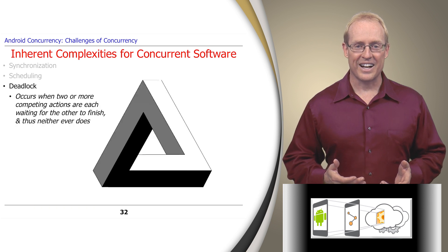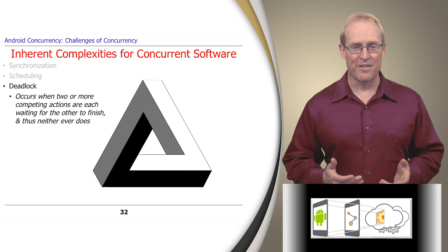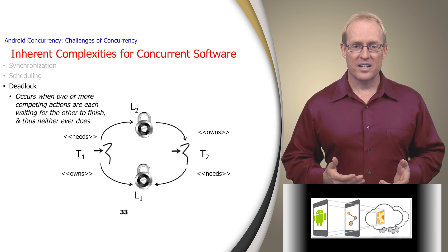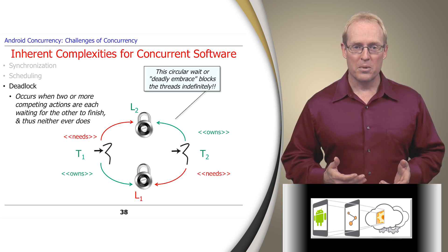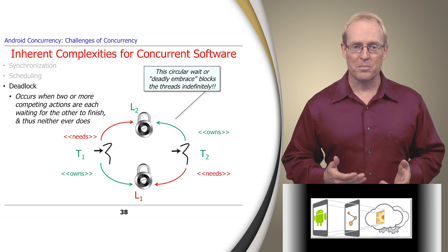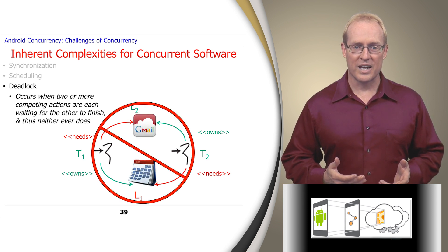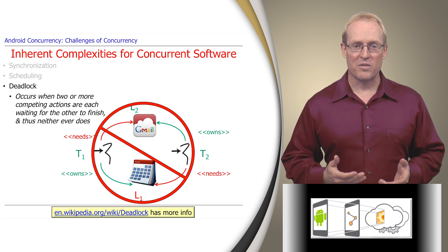Another inherent complexity is deadlock, which occurs when two or more competing actions are each waiting for the other to finish, and thus none ever do. The diagram on this slide shows a deadlock where thread T1 owns lock L1 and needs to acquire lock L2, while thread T2 owns lock L2 and needs to acquire lock L1. This circular wait, or deadly embrace, blocks the threads indefinitely. Identifying, detecting, and removing deadlocks is an inherent complexity of developing concurrent software. For example, you wouldn't want the Android Gmail application to deadlock on resources held by the calendar application and vice versa. This link provides more information on deadlock.